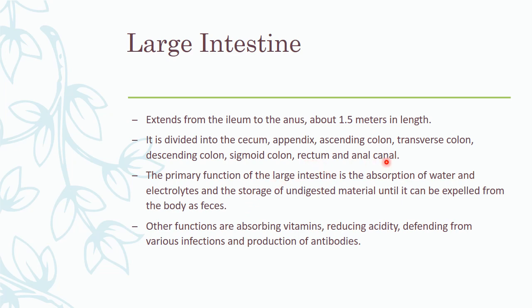The rectum and the anal canal are covered in the pelvis and perineum portion of anatomy, whereas we will cover up to the sigmoid colon here. The primary function of the large intestine is the absorption of water and electrolytes and the storage of undigested material until it can be expelled as feces. Other functions include absorption of vitamins, reduction of acidity, and production of antibodies against infections.